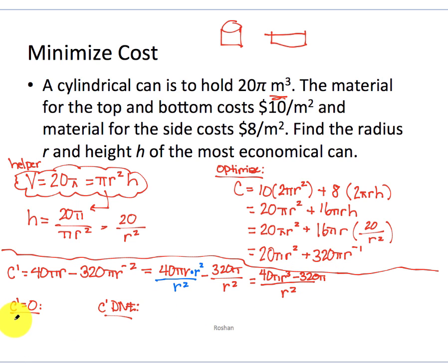So that is going to be 40πr minus 320π over r². So obviously my big denominator is going to be that r². In order to get the r² in this denominator, I must multiply the numerator by r² also. And so I have 40πr³ minus 320π. So c' equals 0 when the numerator equals 0. 40πr³ equals 320π. In other words, r³ equals 8. r equals 2.